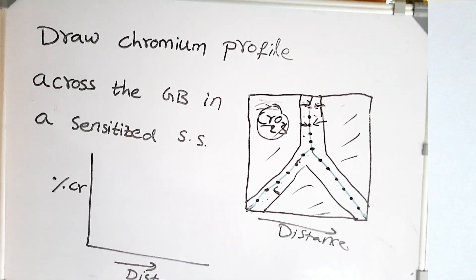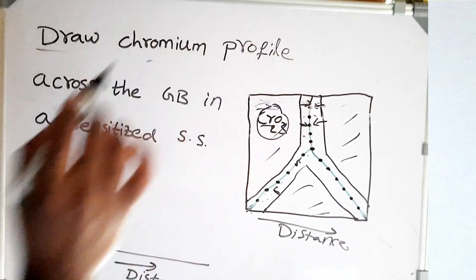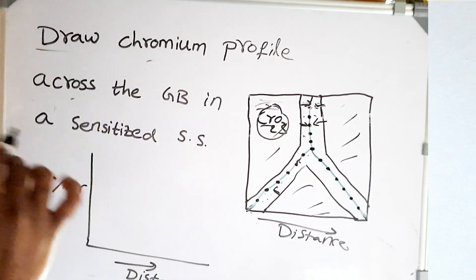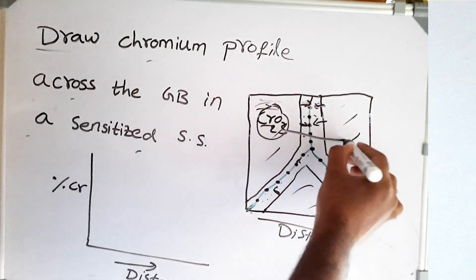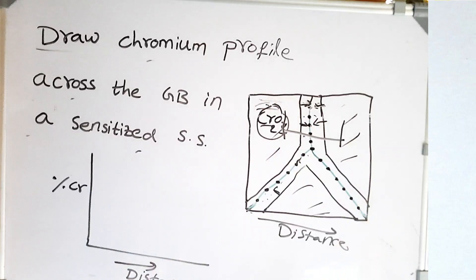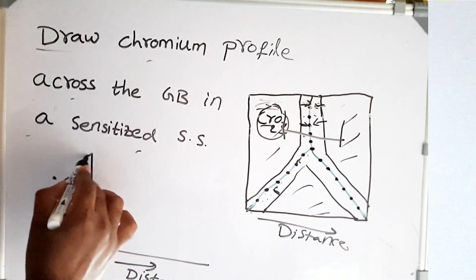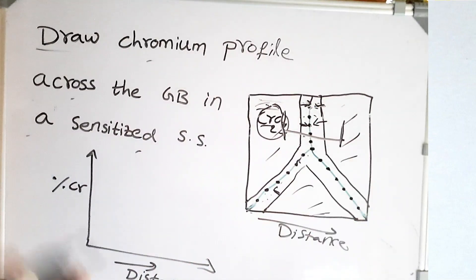Here is a little assignment — this is one of the bar category questions. Draw the chromium profile across the grain boundary in a sensitized stainless steel. Draw percentage of chromium versus distance across this region, and post it in our Telegram group and I'll say whether it is correct or not.